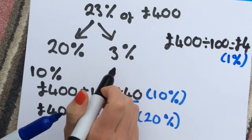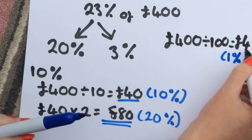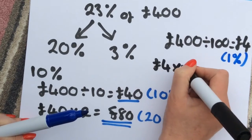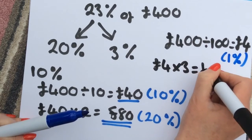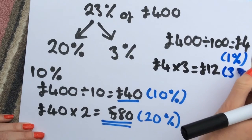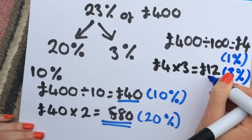Because we want to find 3%, we've then got to multiply our £4 by 3. So we take 4, multiply that by 3. That will give you 12. So that's now worth 3%.